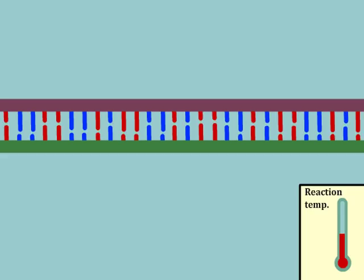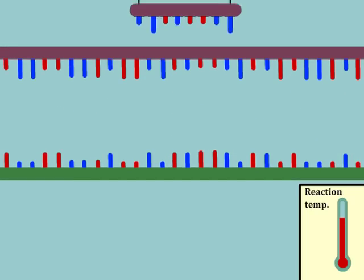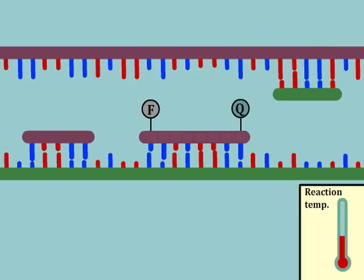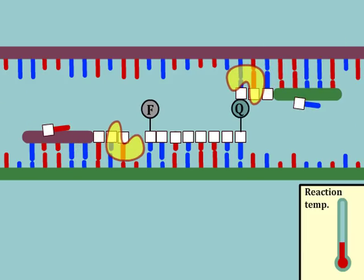As the primers bind to the separated strands of DNA, the probe also finds its complementary sites between them. The enzyme that synthesizes new DNA from the ends of the primers also has a second activity, an exonuclease activity.